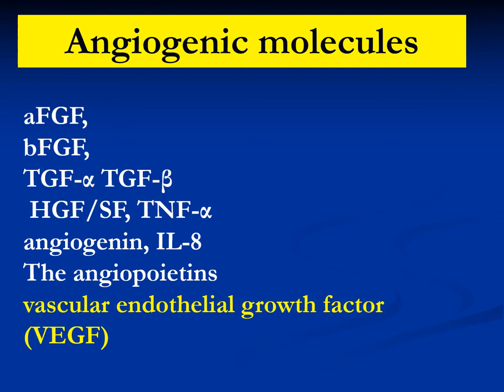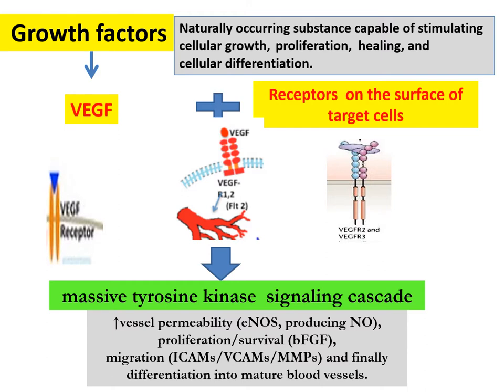Angiogenesis is dependent on inflammation, increased prostaglandins, and increased growth factors — all responsible for the development of new blood vessels from pre-existing normal blood vessels in the endometrium or ovary. The most commonly studied angiogenic molecule in endometriosis is vascular endothelial growth factor (VEGF). The growth factors attach to receptors on the surface of target organs, leading to a tyrosine kinase signaling cascade with increased vessel permeability, proliferation, migration, and differentiation into mature blood vessels.